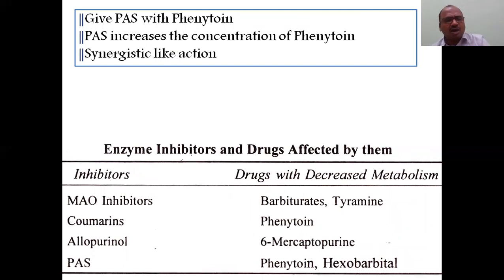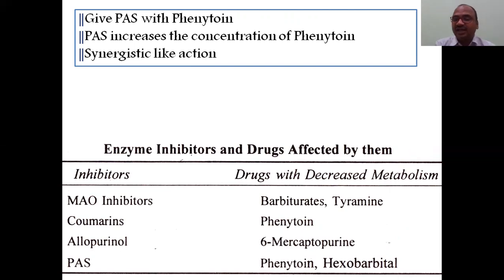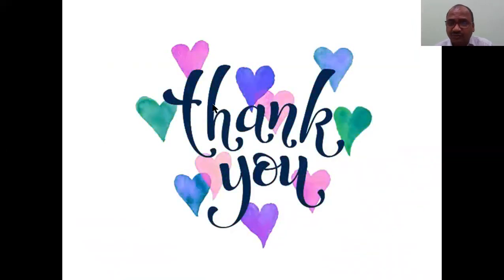These are the inhibitors. You can always give enzyme inhibitors with drugs to increase their action together. Examples of inhibitor combinations include: coumarin plus phenytoin, allopurinol with mercaptopurine, PAS with phenytoin, and hexobarbital. With this, we have completed the metabolism/biotransformation process.